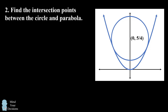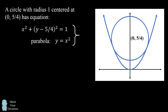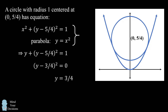Now we need to find the intersection points between the circle and the parabola. We have a circle of radius 1 centered at (0, 5/4). This circle has the equation x squared plus the quantity (y minus 5/4) squared equals 1. We substitute y equals x squared into this equation, giving us y plus the quantity (y minus 5/4) squared equals 1. After simplification, we get that (y minus 3/4) squared equals zero, so y equals 3/4. Since y equals x squared, x equals negative square root of 3 over 2 or positive square root of 3 over 2. So we found our two intersection points.